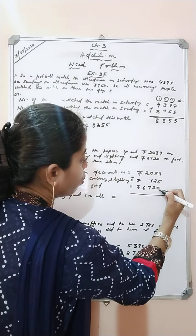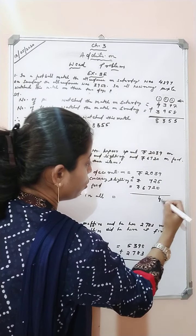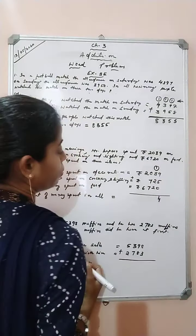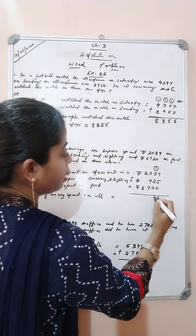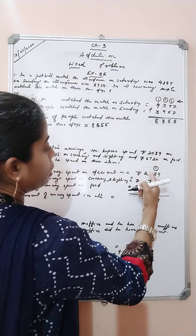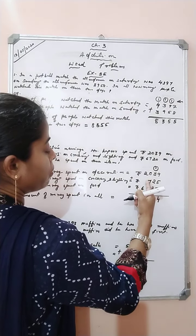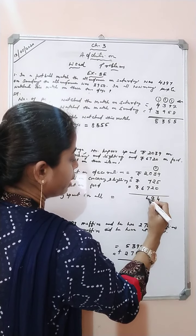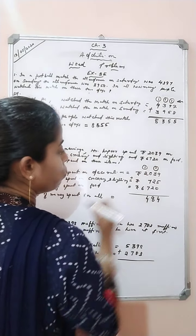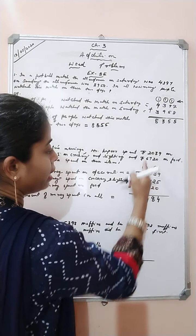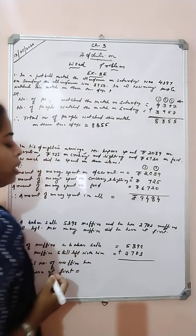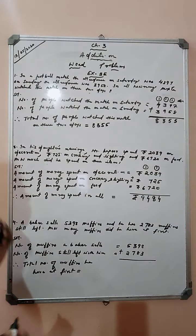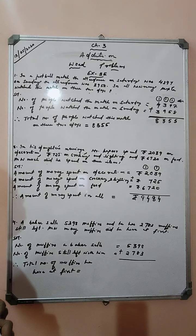9 plus 5 is 14, plus 0 is 14 — write 4, carry 1. 3 plus 2 is 5, plus 2 is 7, plus 1 is 8. 0 plus 7 is 7, plus 7 is 14 — write 4, carry 1. 2 plus 6 is 8, plus 1 is 9. It is Rs. 9,484 spent in all.